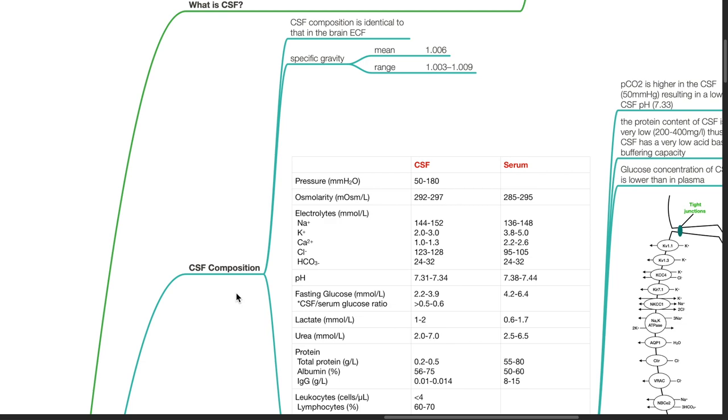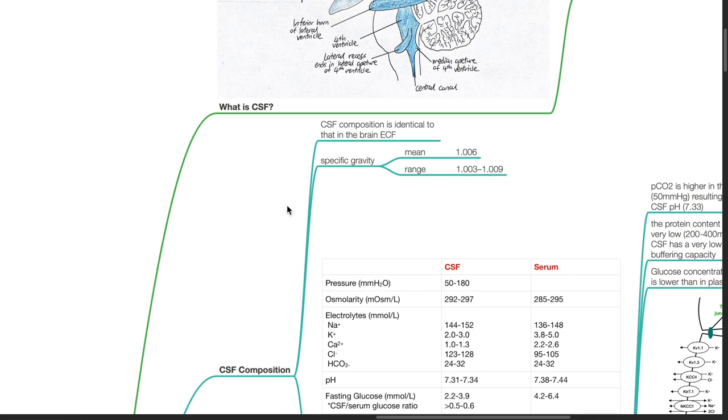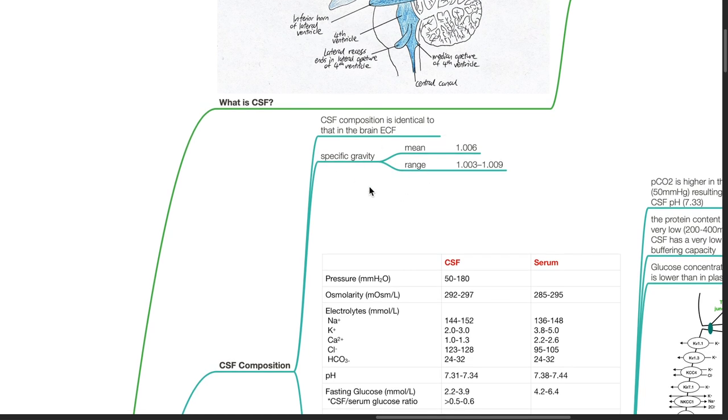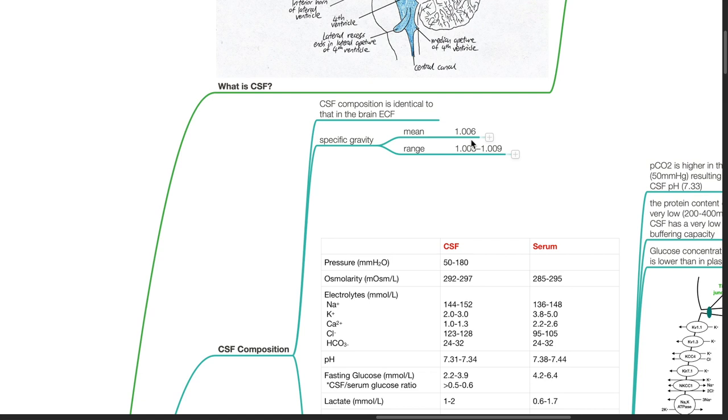CSF composition. CSF composition is identical to that in the brain ECF. The mean specific gravity of CSF is 1.006 and ranges from 1.003 to 1.009.